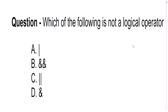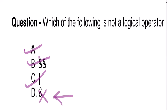In this question we are asked: which of the following operators is not a logical operator? The options include logical NOT (!), logical AND (&&), logical OR (||), and bitwise AND (&). The answer is the single ampersand (&), which is the bitwise AND operator — it works on bits, not on logical values. The double ampersand (&&) is logical AND, and a single pipe would be logical OR.